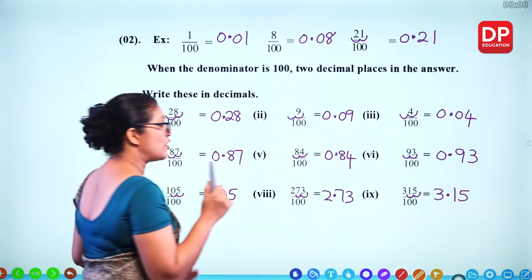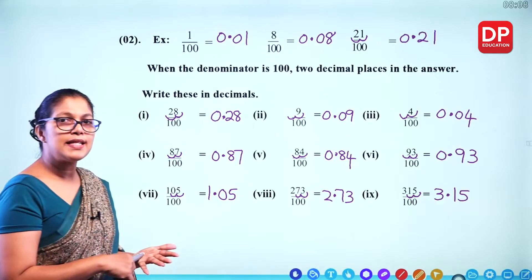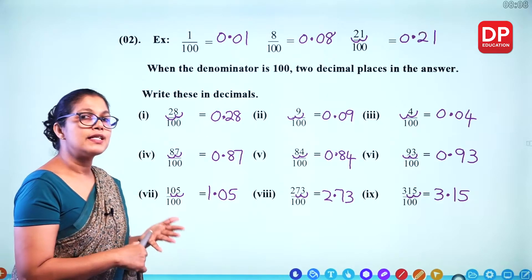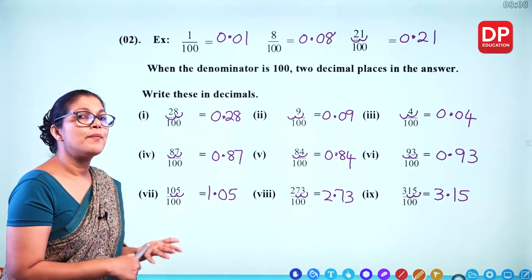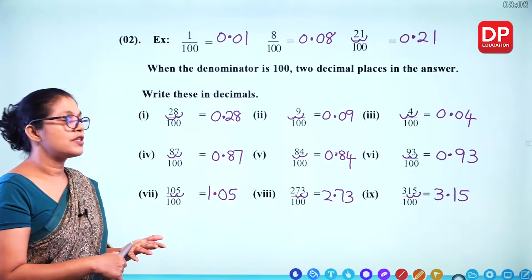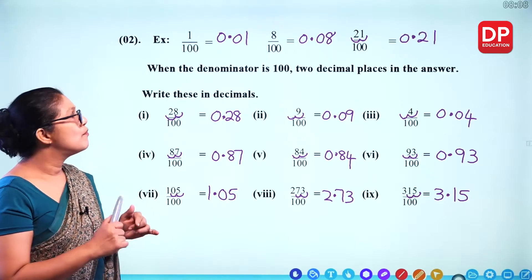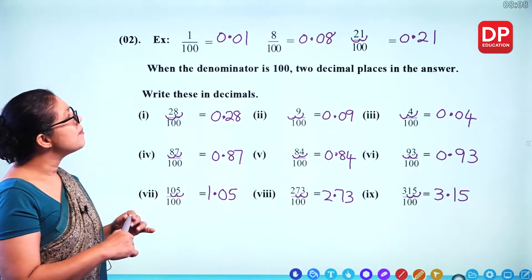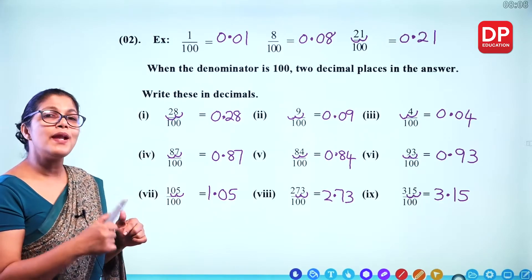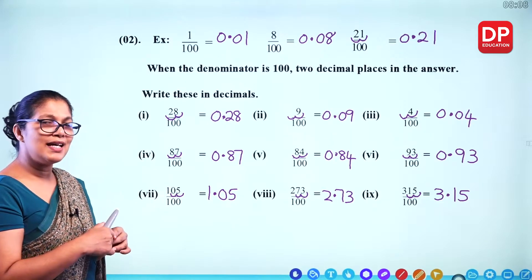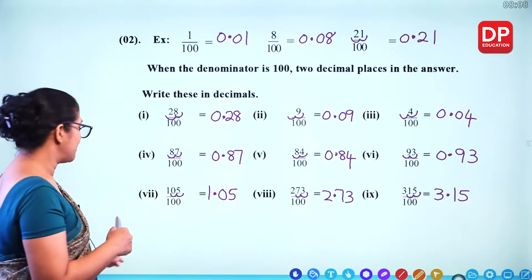So to summarize: when you divide by 10, move the decimal place 1 place to the left. When you divide by 100, move the decimal place 2 places to the left.